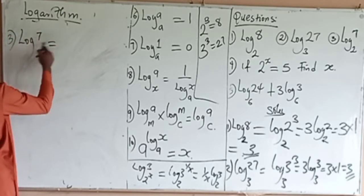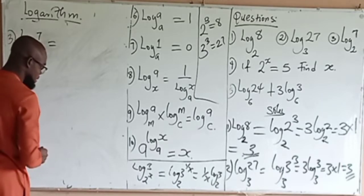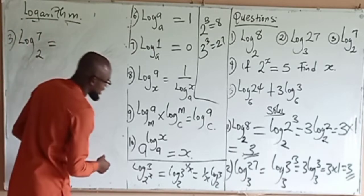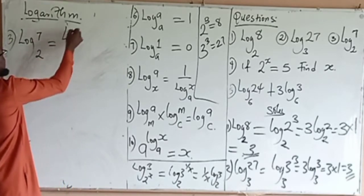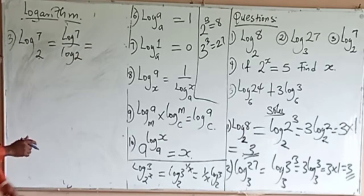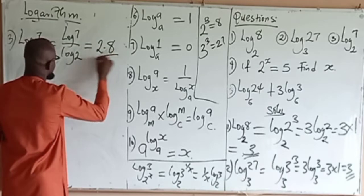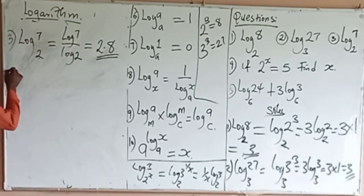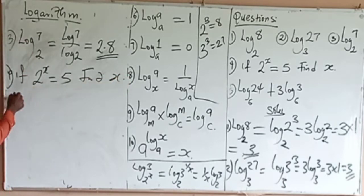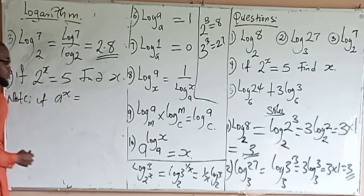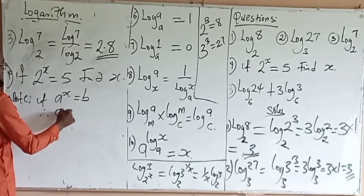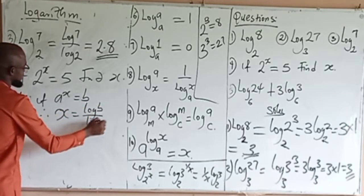Question 3: log 7 to base 2. Since there is no whole-number power, we use the change of base formula. If you have log A to base B, it equals log A divided by log B. So log 7 to base 2 becomes log 7 divided by log 2, which gives approximately 2.8. Also note: if a to the power x equals B, then x equals log B divided by log A. That is very important.